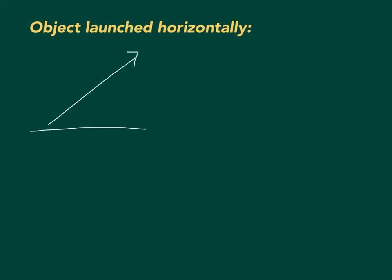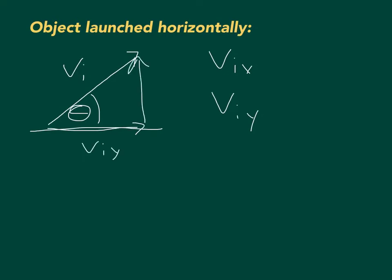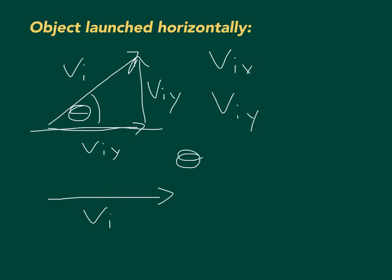When it comes to the initial velocity, you write it as a vector that normally makes some angle with the ground. We learned ways to calculate v_initial_x and v_initial_y using trigonometry. But if the object is launched horizontally, it's as if this angle is zero — v_initial is completely horizontal, meaning theta equals zero.